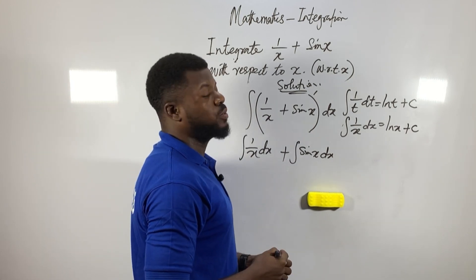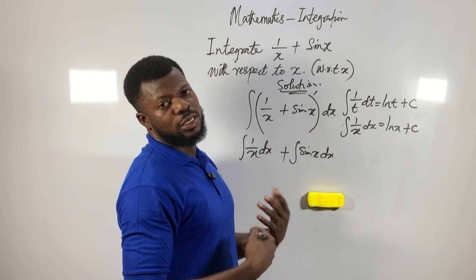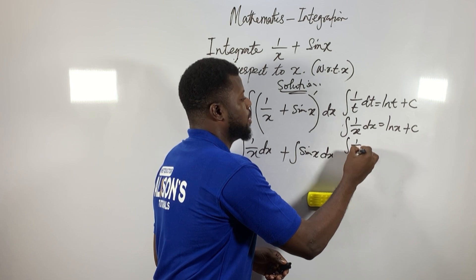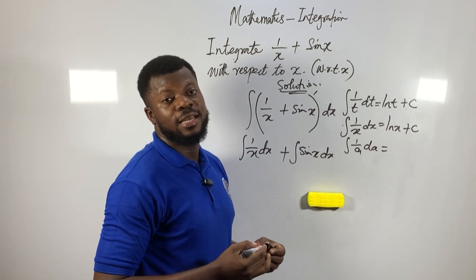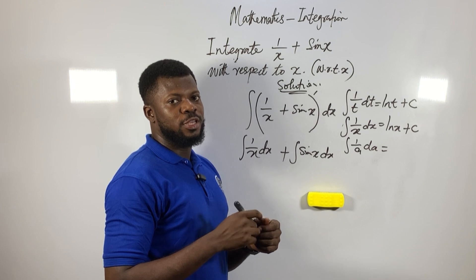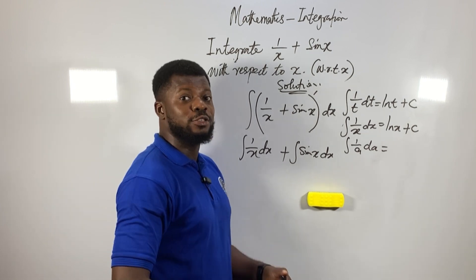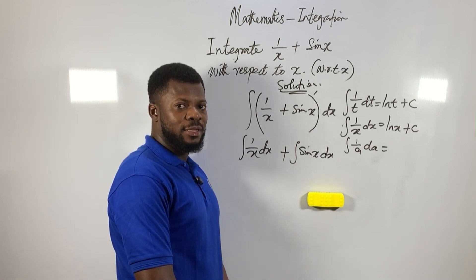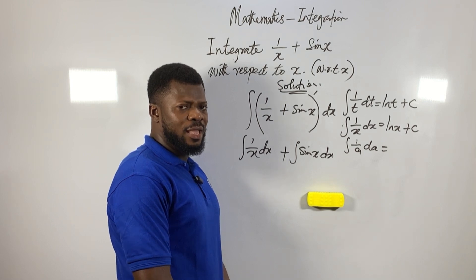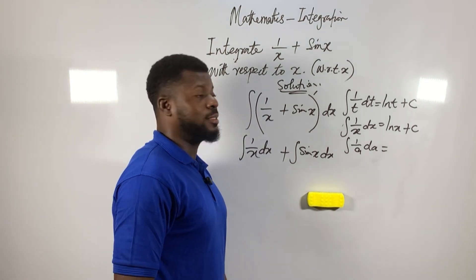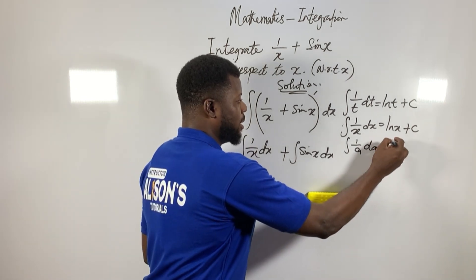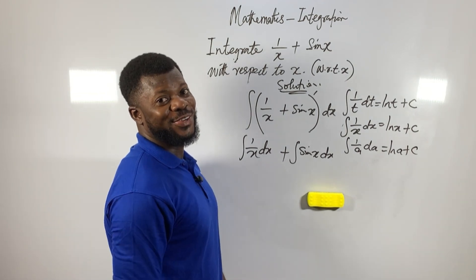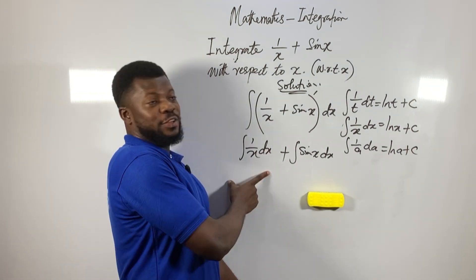The natural logarithm of x, plus C — that is the answer. Now let me give you a practice question: what is the integral of (1/a) with respect to a? Put your answer in the comment section. The answer is ln(a) + C. Whether you use k or c for the constant, it is still correct — ln(a) + C.